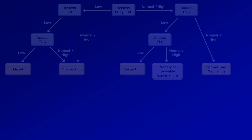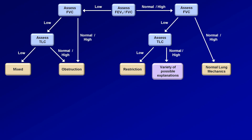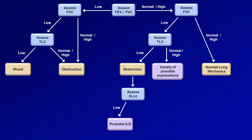So how does the DLCO help us diagnostically? You will hopefully recognize this algorithm that we have been working on over the past two videos in this series. The greatest diagnostic benefit is probably with differentiating the etiologies of restrictive lung disease. If the DLCO is low, it implies the patient likely has interstitial lung disease, while if the DLCO is normal, it implies the patient has an extrathoracic cause of restriction, such as a chest wall disorder, neuromuscular disease like ALS or diaphragmatic paralysis, or obesity.